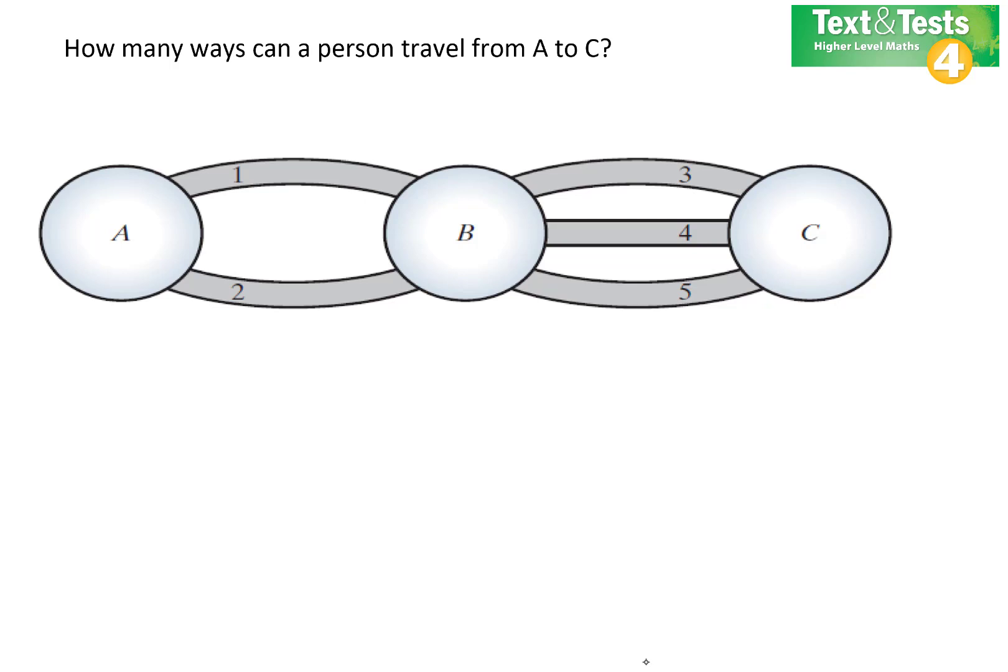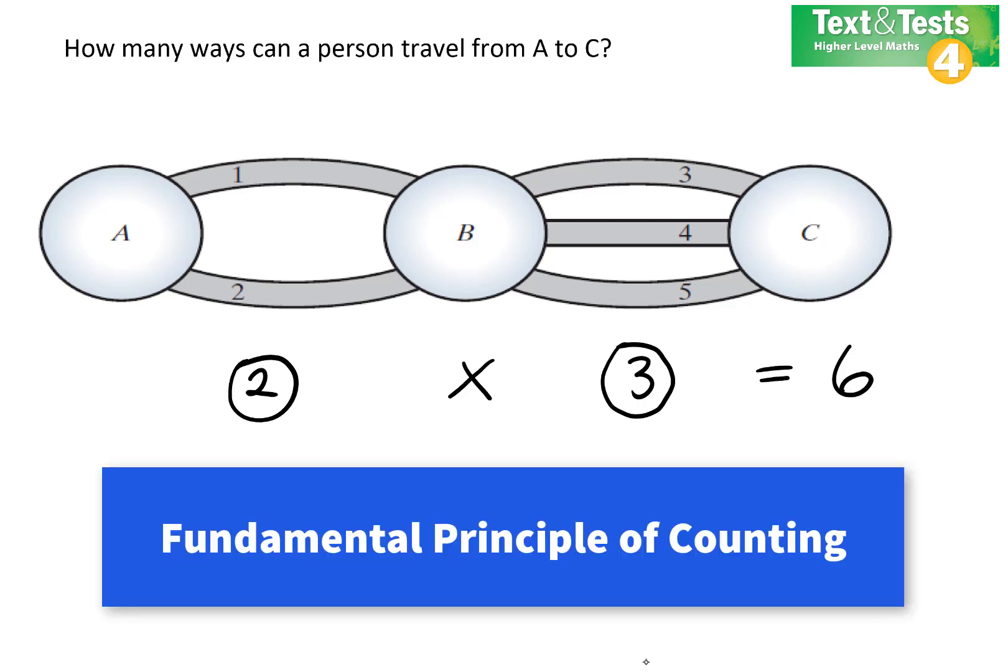So at stage 1 here, we have 2 choices. And at stage 2, we have 3 choices. And according to the fundamental principle of counting, if we multiply these, we'd see that we have 6 options altogether. So that's the fundamental principle.